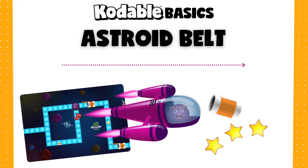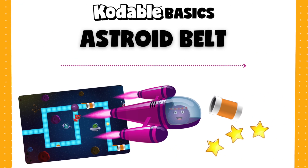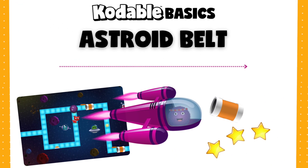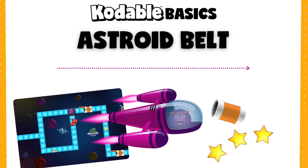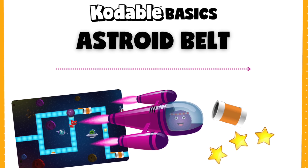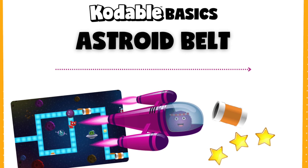Welcome to the Asteroid Belt course, Encodable Basics. Here you'll learn about Booleans, which are used in coding to figure out if something is true or false.